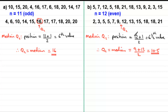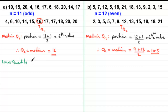Now, what happens if we're finding the lower quartile? The lower quartile is often written as Q1. To find Q1, we look at the list of numbers to the left of the median. In the first list, those numbers are: 4, 6, 10, 14, and 15. In the second example, they are: 2, 3, 5, 5, 7, and 9. We need to find the position of the middle of each of those two sub-lists.